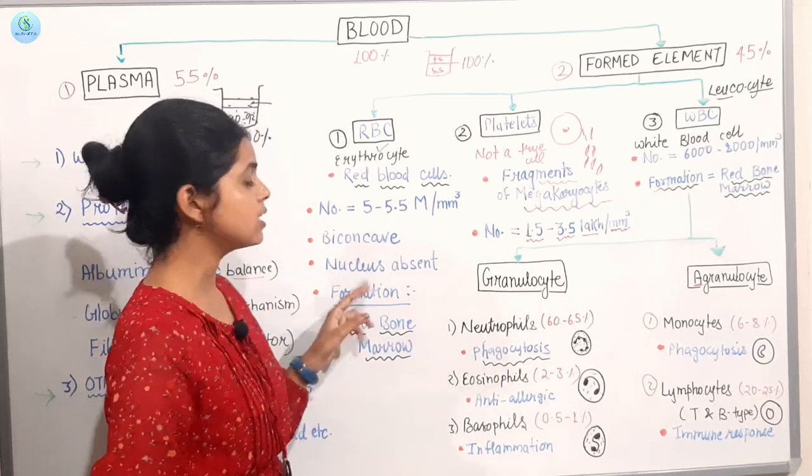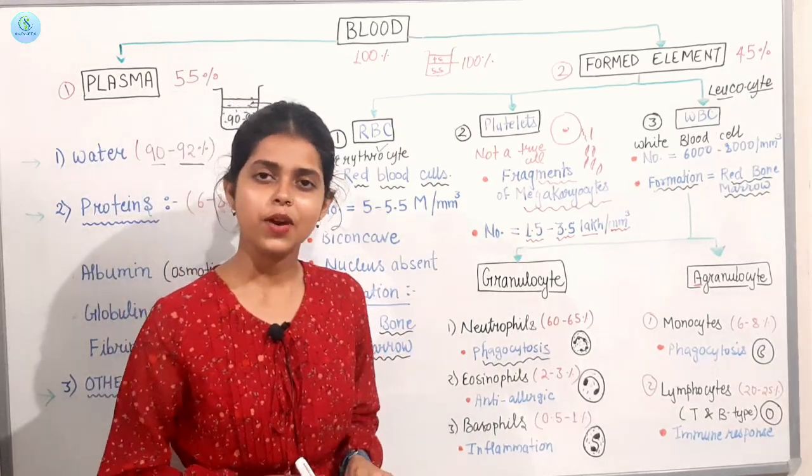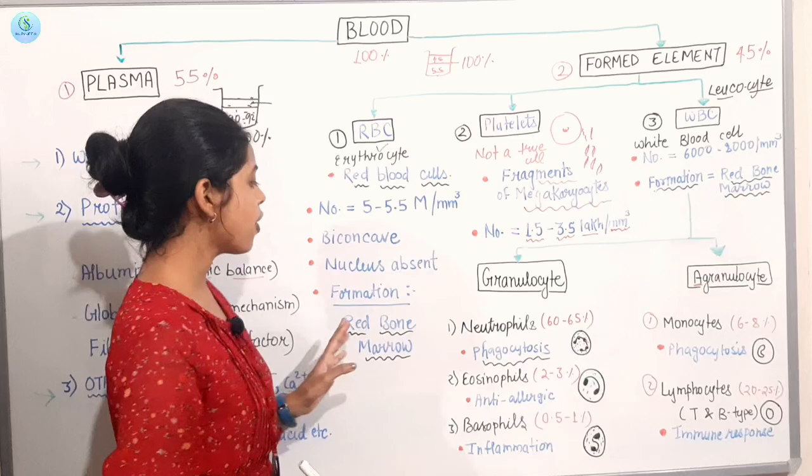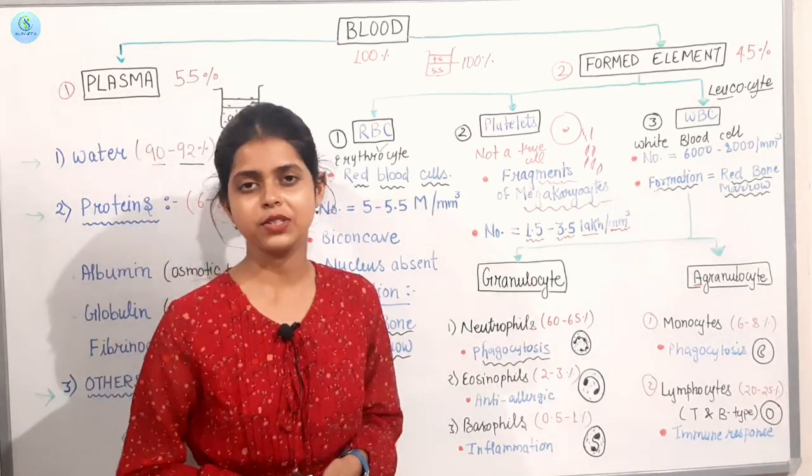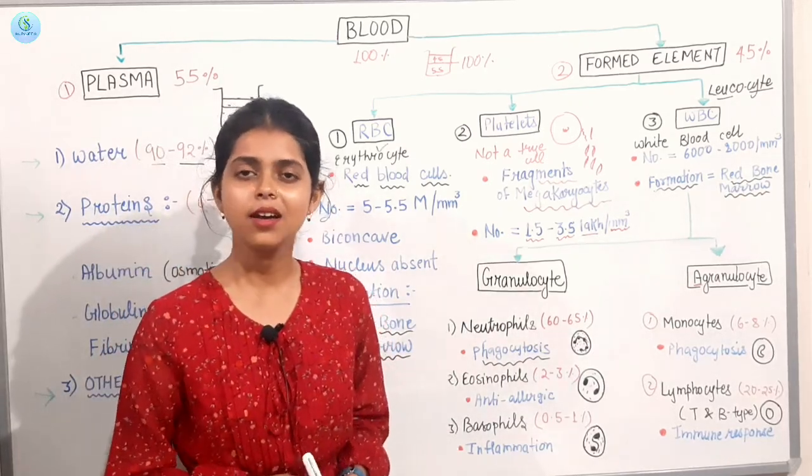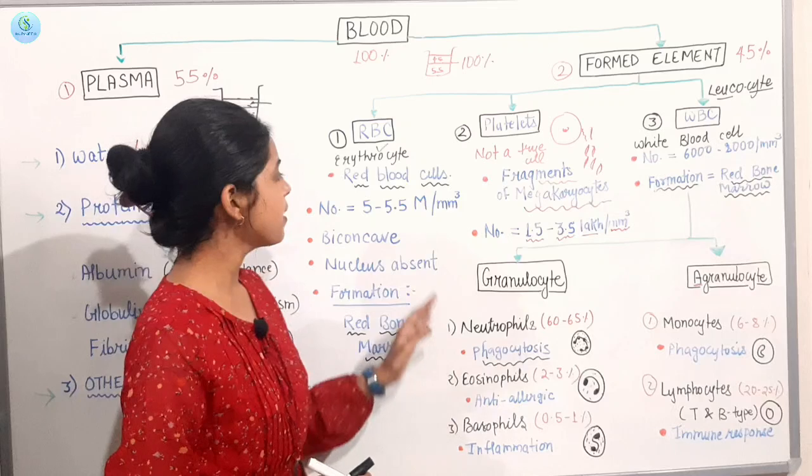This is bi-concave. Plus, the nucleus is absent. And where is the formation? Where is the site of formation? This is our red bone marrow. This is our red blood cells.